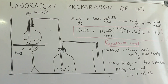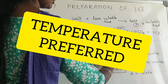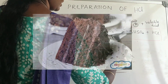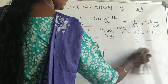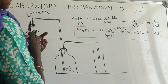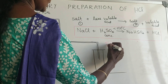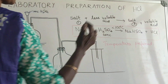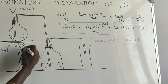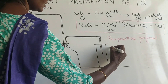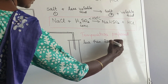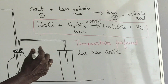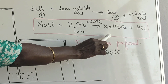The next point is temperature. Just like when you bake a cake and need to know the right temperature — otherwise it becomes a rock — we need to know the preferred temperature here. There are two temperatures that give two different products. The temperature we need is less than 200 degrees Celsius. At this temperature, the reaction gives sodium bisulfate and hydrogen chloride.